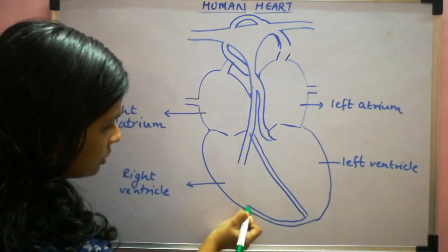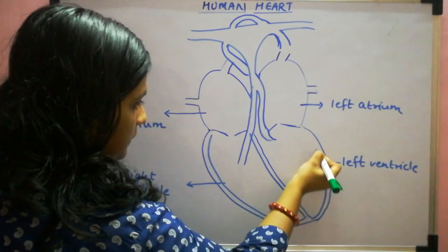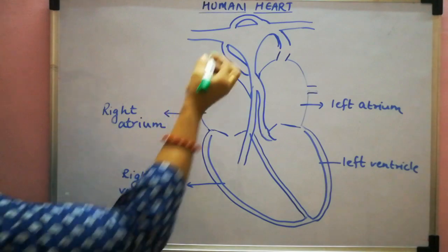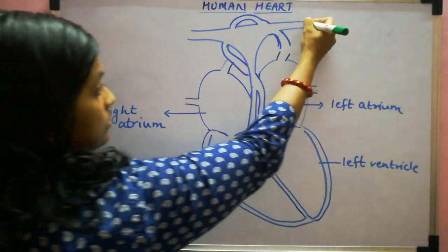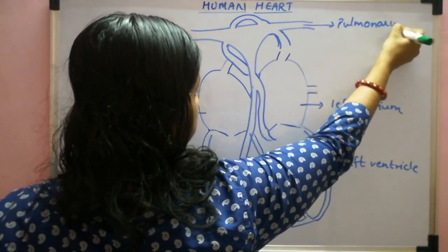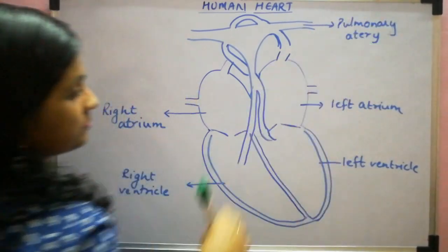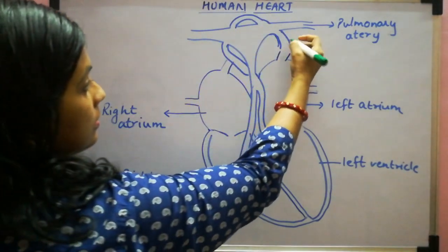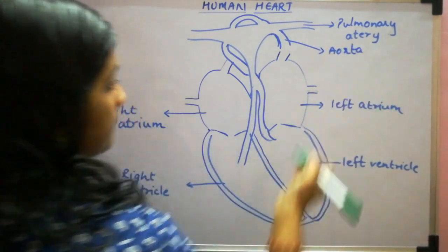So we will just mark the four chambers — put a line and join here, the chambers are ready. Regarding the arteries: this T-shaped artery coming from the right side is known as the pulmonary artery. Then the next one — this partial S — is known as the Aorta.